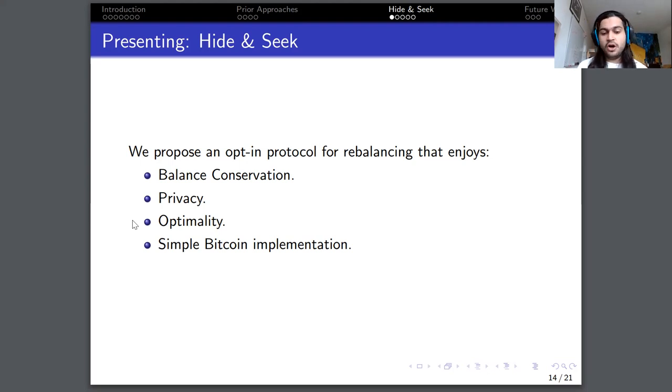Our protocol is also optimal in that it computes the rebalancing with the total flow maximized, similarly to Revive. Although I would like to comment that this notion of optimality can easily be altered. You can change the objective function and as long as it is linear, you can still do it without any slowdowns in the complexity, in the computation. Finally, it has a simple Bitcoin implementation. So instead of tackling the problem of executing the entire rebalancing atomically, we actually break down the rebalancing into cycles. And each cycle is executed independently, which means that it can be executed as a simple self-payment, which is actually the same as a multi-hop payment. So it only requires simple Bitcoin implementation.